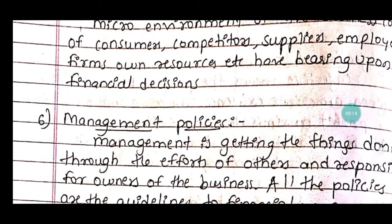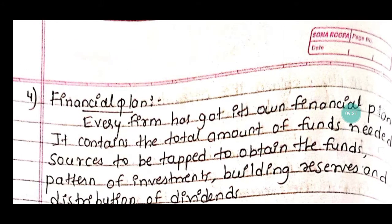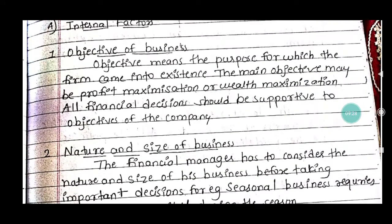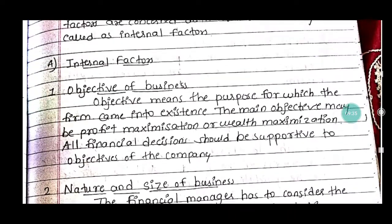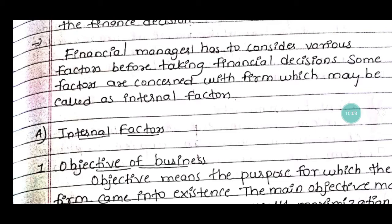To summarize, the internal factors that a finance manager must consider before taking any financial decision are: internal organization, management policy, micro environment, financial plan, objectives of business, nature and size of the business, desire to retain control, and capital structure. These factors must and should be considered by the finance manager before taking any vital decision. Thank you.